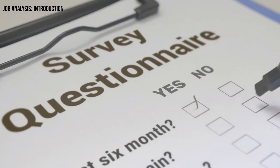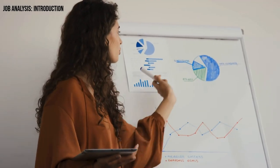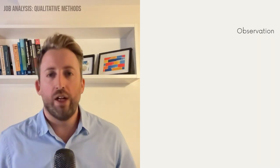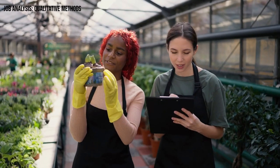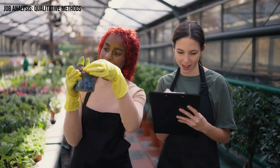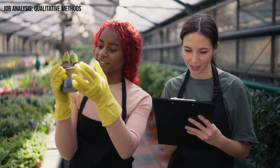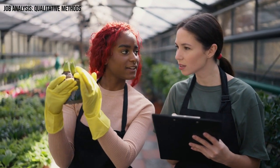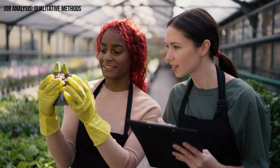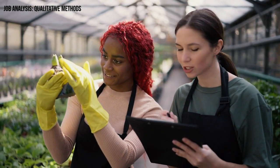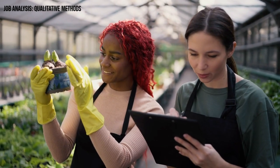Quantitative data usually comes in the form of surveys or questionnaires, providing hard numbers and statistical insights. Qualitative data, on the other hand, offers a more in-depth look at the job. Qualitative methods include, first of all, observation — picture yourself as a job analyst stepping into the workplace and following employees around, taking notes on what they're doing and how they're doing it. This method, known as a time-in-motion study, allows you to experience the job from an outsider's perspective.